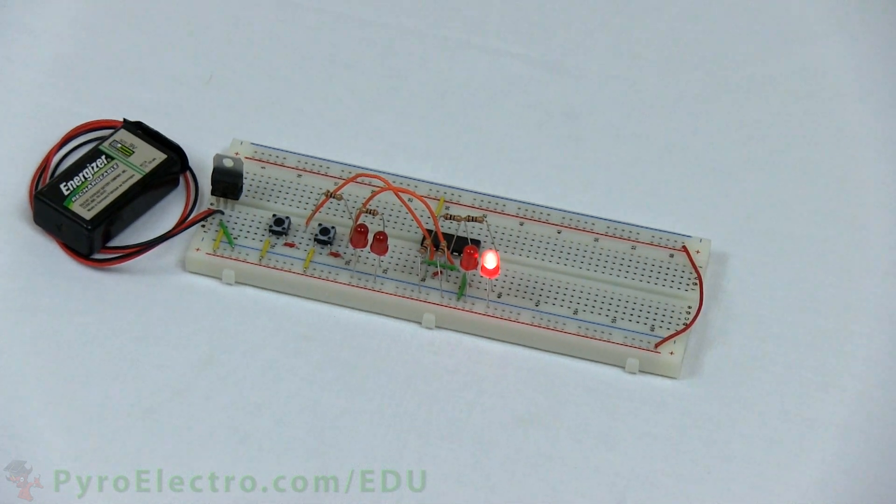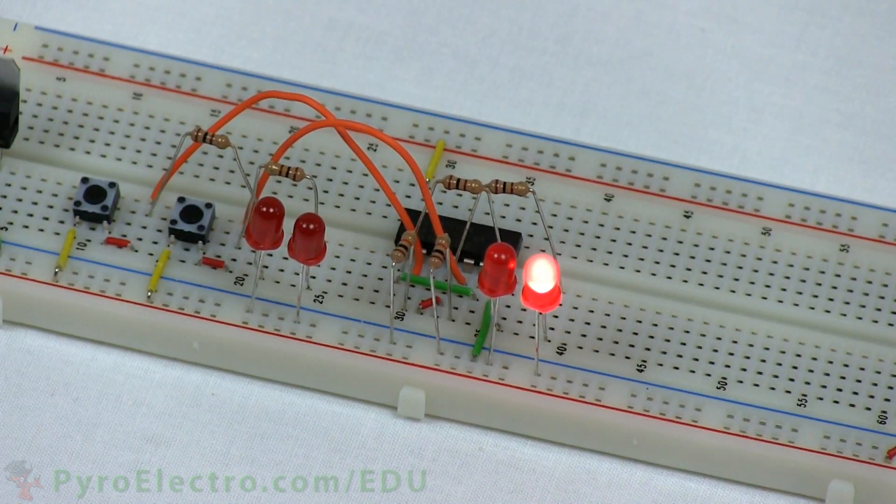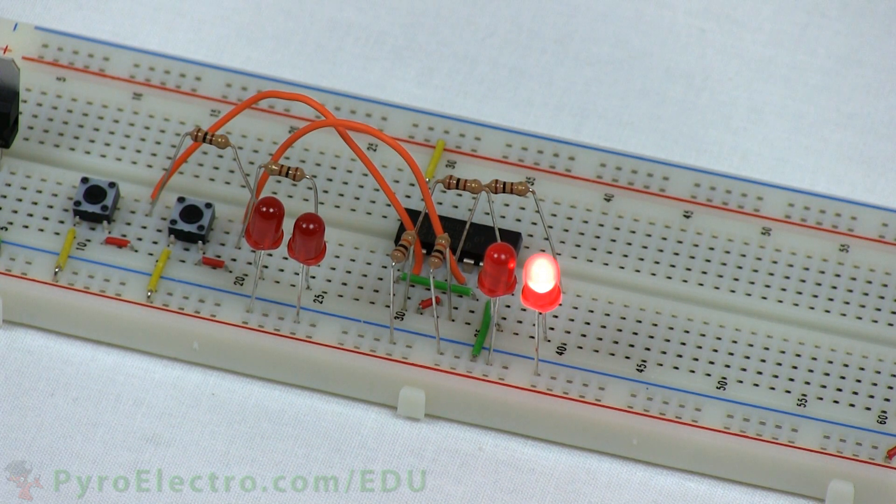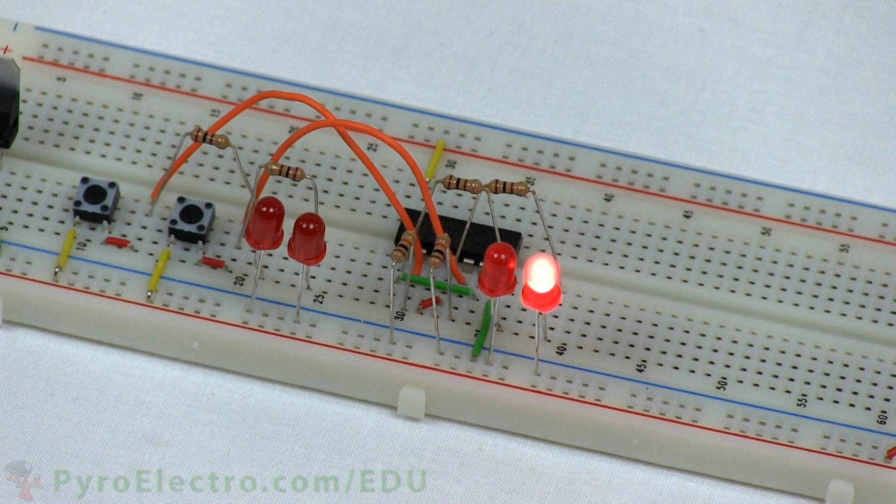On power-up, notice that the input LEDs are both off, but one output LED, Q̄, is on, while the Q output is off. This is exactly as we saw in the truth table.